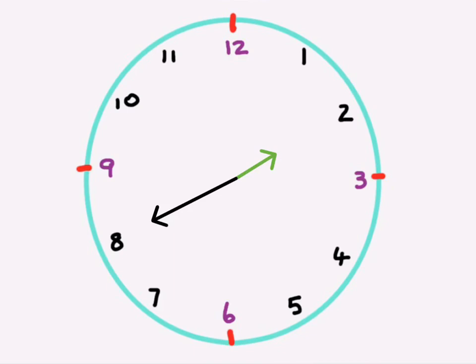Right. So now how are we going to get to the eight? We're going to count in fives. Five, 10, 15, 20, 25, 30, 35, 40. 40 minutes past two.